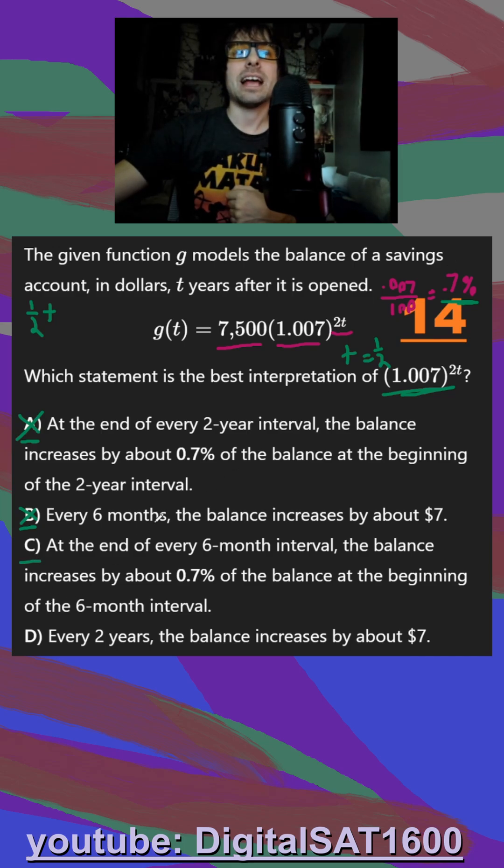In C, at the end of every six month interval, the balance increases by about 0.7%. That's 100% what we were looking for. And just to make sure in D, every two years, that's not it. It's going to be C.